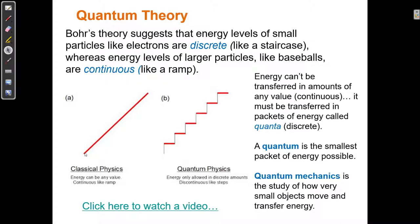You can put any number of numerals after the decimal point in classical physics. In a discrete system like this, you can't. You can have 1 or 2. You can't have 1.5 or 1.25. Those values aren't accessible. The only values that are accessible are 1, 2, 3, 4, 5, and 6. That's it. You can't get at any of those values in between. So energy can't be transferred in amounts of any value. It must be transferred in packets of energy that are called quanta. A quantum is the smallest packet of energy available. So quantum mechanics is a branch that describes the motion of very small things and how they move and how they transfer energy. And they transfer energy in these quanta.